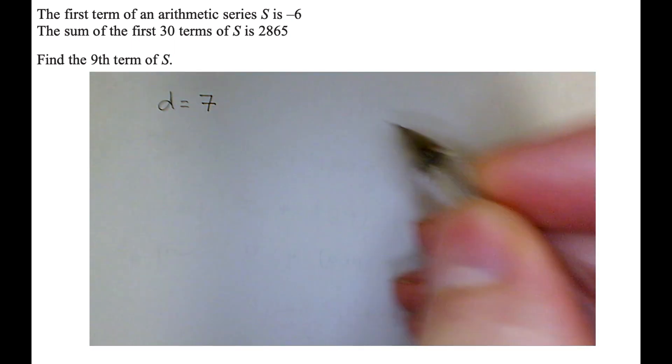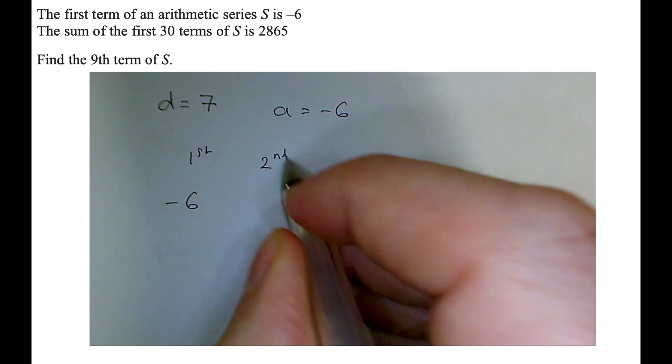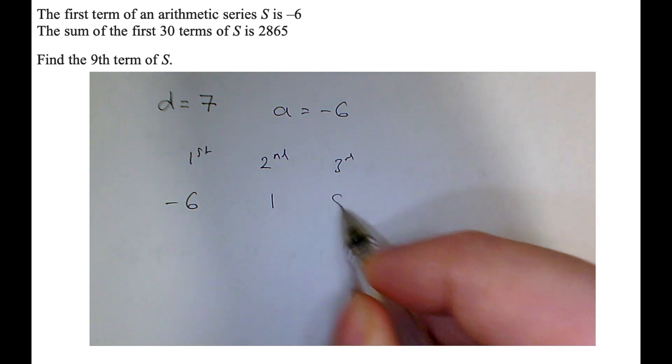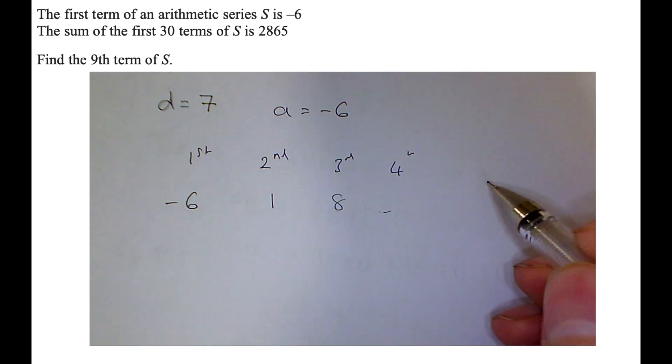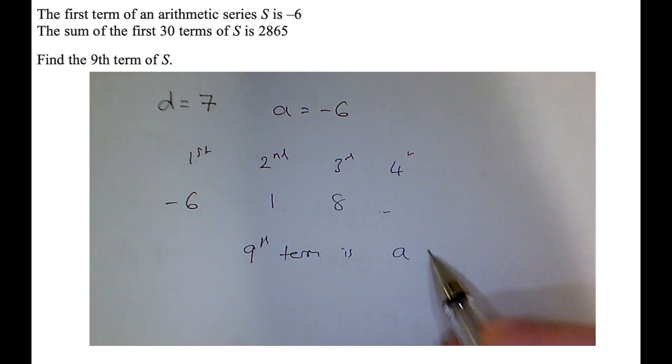Okay, so now I've found all my terms, I can find the 9th term. The first term is minus 6, and now I'm going to keep adding on 8 more common differences until I get to the 9th term. So I'll just write an example: minus 6, I add on 7, I add on 7 again, I add on 7 again. I'm going to do that 8 times. So the 9th term is the first term plus 8 lots of the difference.